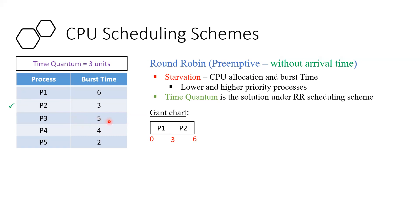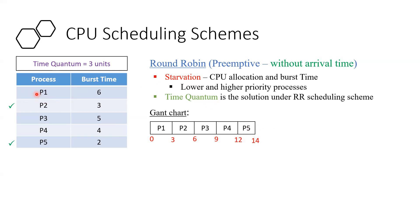After P2, P3 is assigned. P3 needs 5 units but we can only assign 3, so 3 units are given at time 6 to 9, and 2 remaining go to the next round. Then P4 requires 4 units; 3 units are assigned and 1 remains for next round. P5 requires 2 units; with time quantum of 3, P5 completes at time 14. Then in the next round, P1 gets 3 remaining units and completes. P3 gets its remaining 2 units, and P4 gets its final 1 unit. Total completion time is 20.